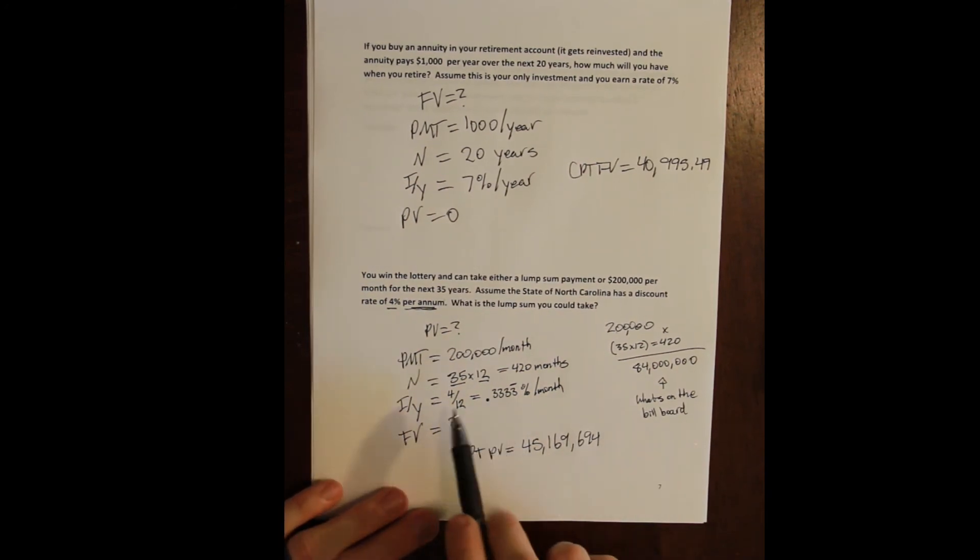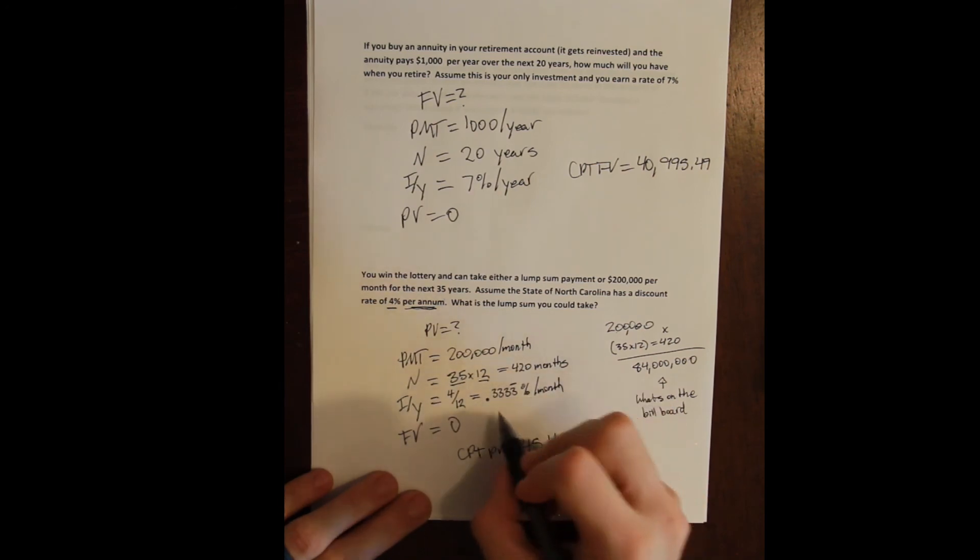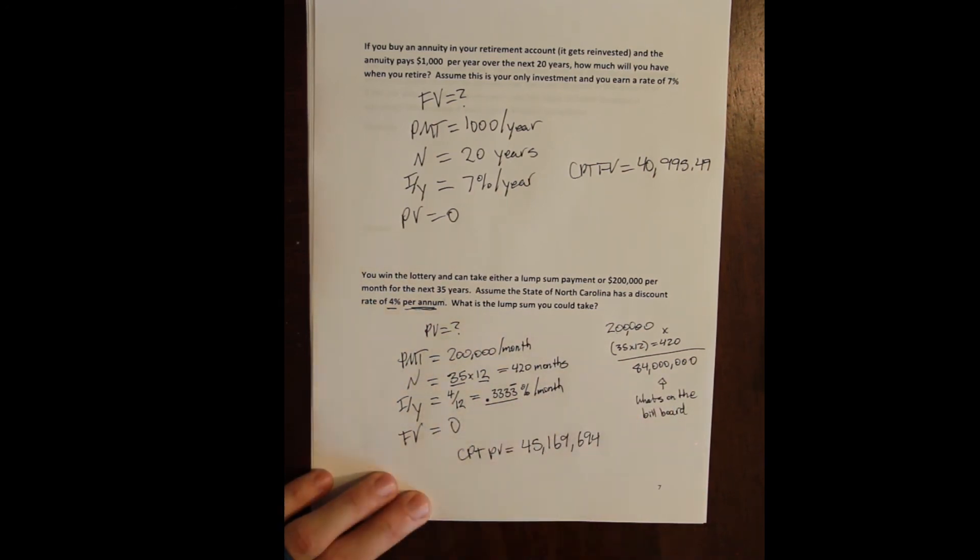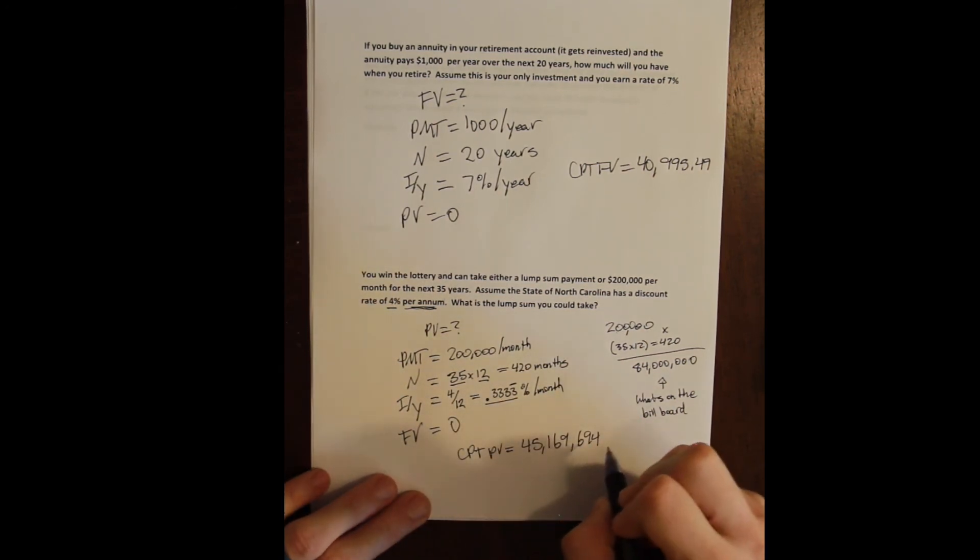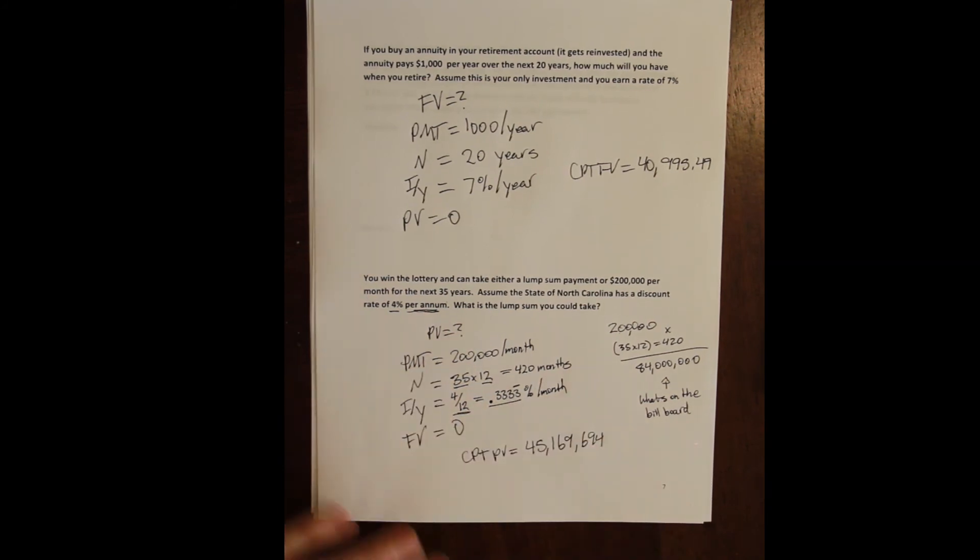So we compute the present value of this annuity and we get $45,169,694. And again, if you enter 0.333, you're going to get a bigger difference than if you set the answer to be equal to that, especially because of the difference in the number of compounding periods.